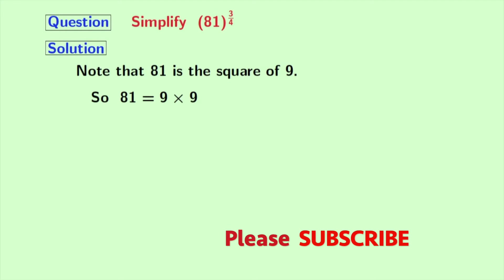Again, 9 is equal to 3 times 3. So, we can express 81 as 3 times 3 times 3 times 3. And we can rewrite it as 3 power 4 as it is a product of 4 number of 3's.